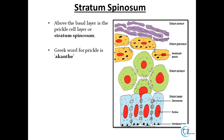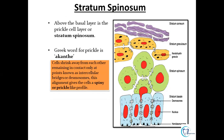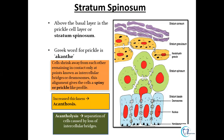Above the basal layer is the prickle cell layer, also known as stratum spinosum. The word 'prickle' is derived from the Greek word 'acanthe' meaning spinous. When cells shrink away from each other and make contact only through intercellular bridges and desmosomal junctions, they attain a prickle-like profile. Therefore, if there is increase in thickness of the spinous layer, we call it acanthosis. If there is separation of cells by loss of these junctions, that is known as acantholysis — these terms will be used in oral pathology.